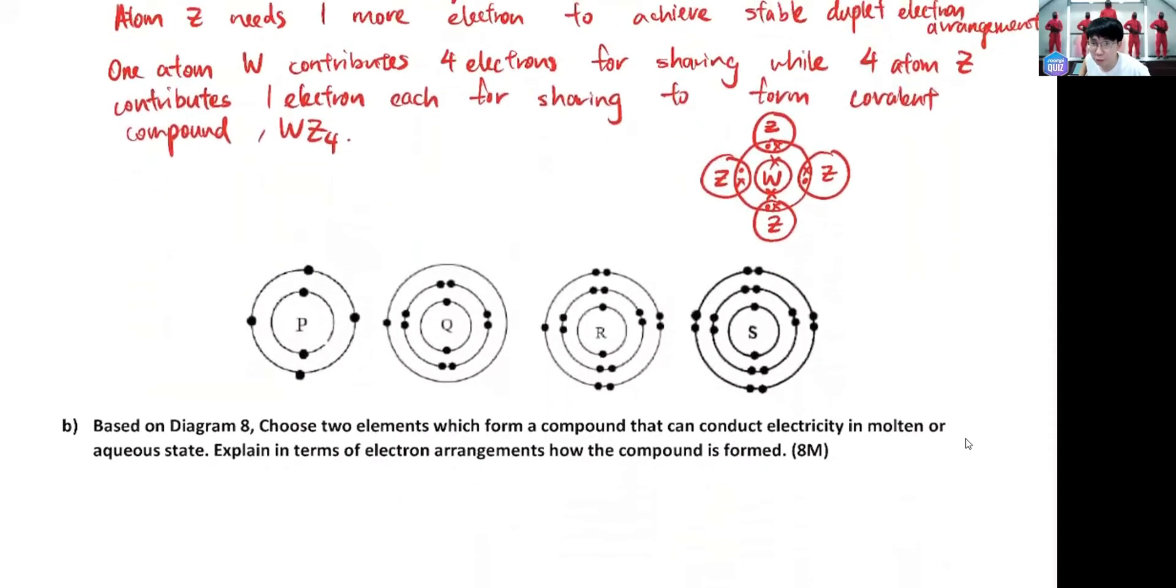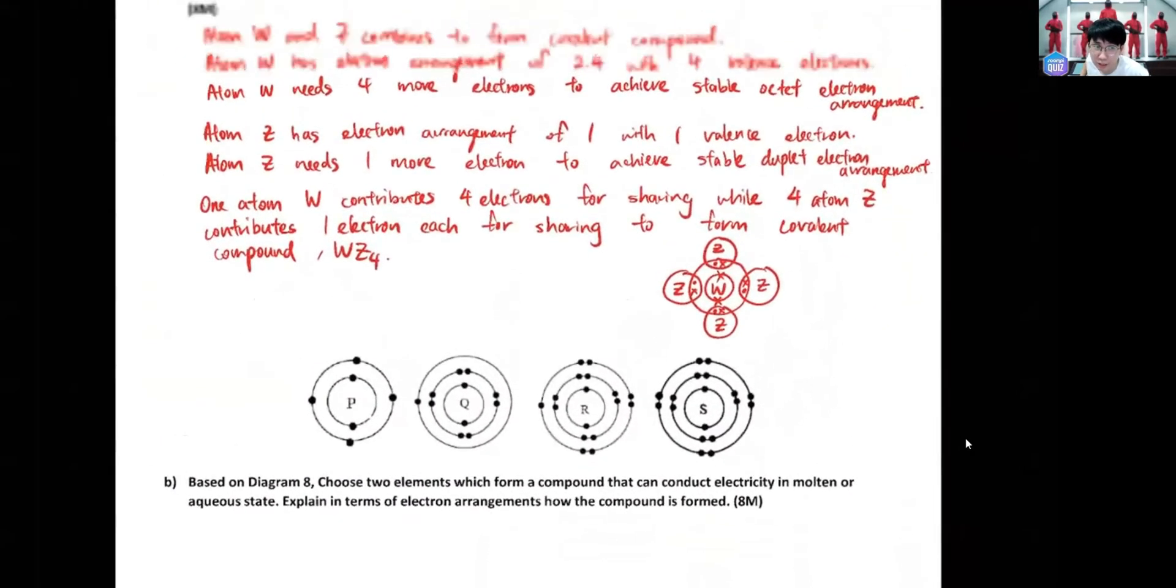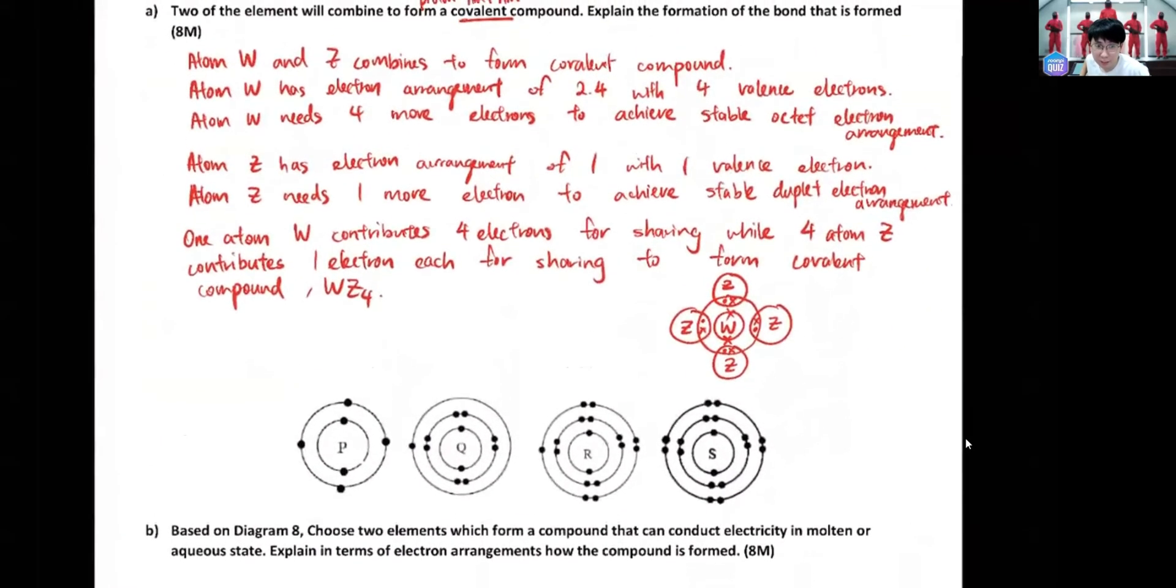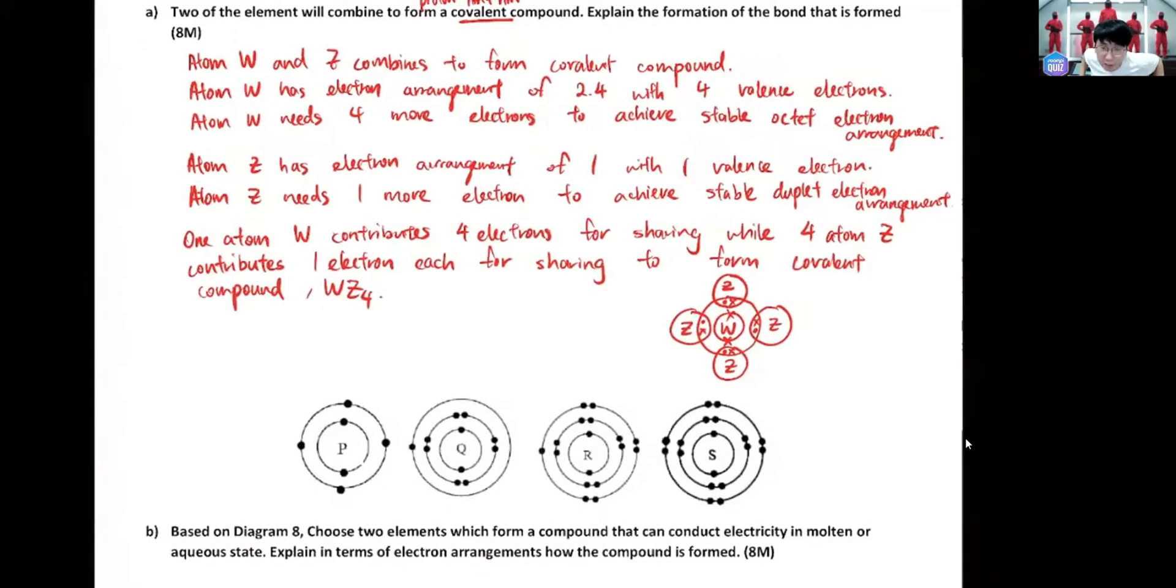Okay, when you go down to another one I have P, Q, R, and S. I'm gonna put it like this: Based on diagram 8, choose P, Q, R, S - choose 2 to form a compound that can conduct electricity. Guys, ionic and covalent, who's the one that can conduct electricity?